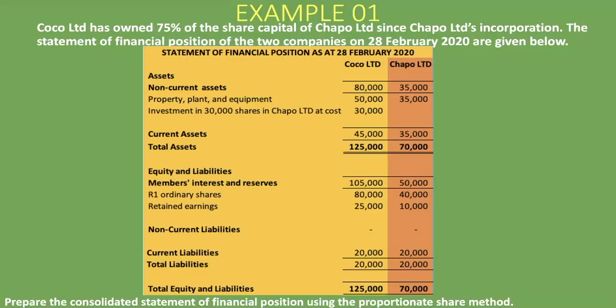Coco Limited has owned 75% of the share capital of Chapel Limited since Chapel Limited's incorporation. The statement of financial position of the two companies on the 28th of February 2020 are given below — Coco Limited being the parent company and Chapel Limited in orange being the subsidiary. We are asked to prepare the consolidated statement of financial position using the proportionate share method, which is a common method of doing consolidations.